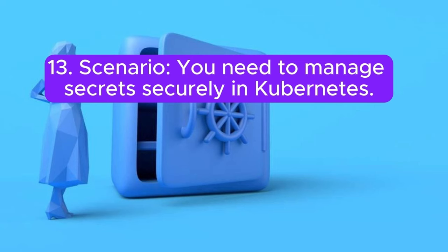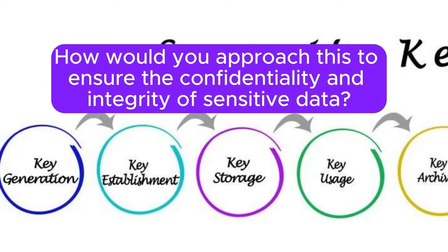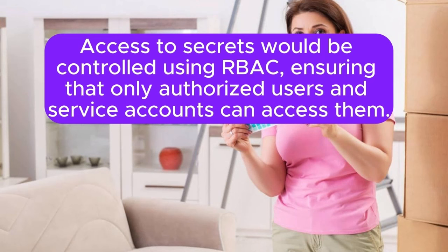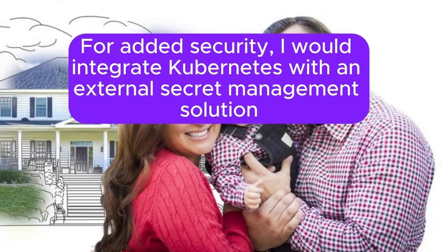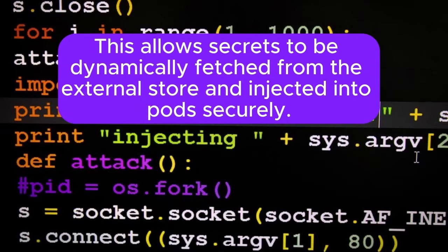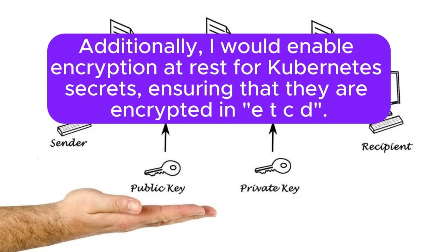Scenario 13: You need to manage secrets securely in Kubernetes. How would you ensure the confidentiality and integrity of sensitive data? Answer: I would use Kubernetes secrets to store sensitive data, with access controlled using RBAC to ensure only authorized users and service accounts can access them. For added security, I would integrate Kubernetes with an external secret management solution like HashiCorp Vault or Azure Key Vault, using the Kubernetes Secret Store CSI driver to dynamically fetch and inject secrets into pods securely. Additionally, I would enable encryption at rest for Kubernetes secrets, ensuring they are encrypted in etcd.